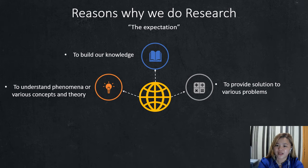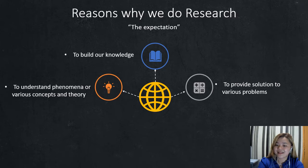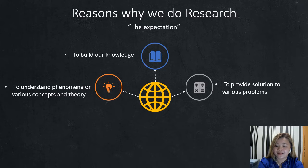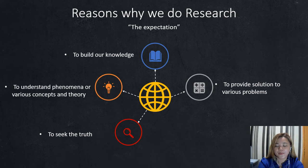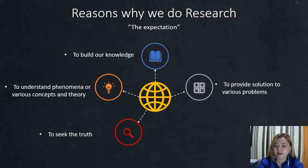Number three is to provide solutions to various problems. We do research in order to reach a certain conclusion. Research uses systematic and scientific methodologies to reach the objective, the goal, and the conclusion to a certain problem or theory. Number four is to seek the truth — we do research to know where we stand. For example, the Big Bang Theory: do you believe in it or not? We seek the answer by researching.